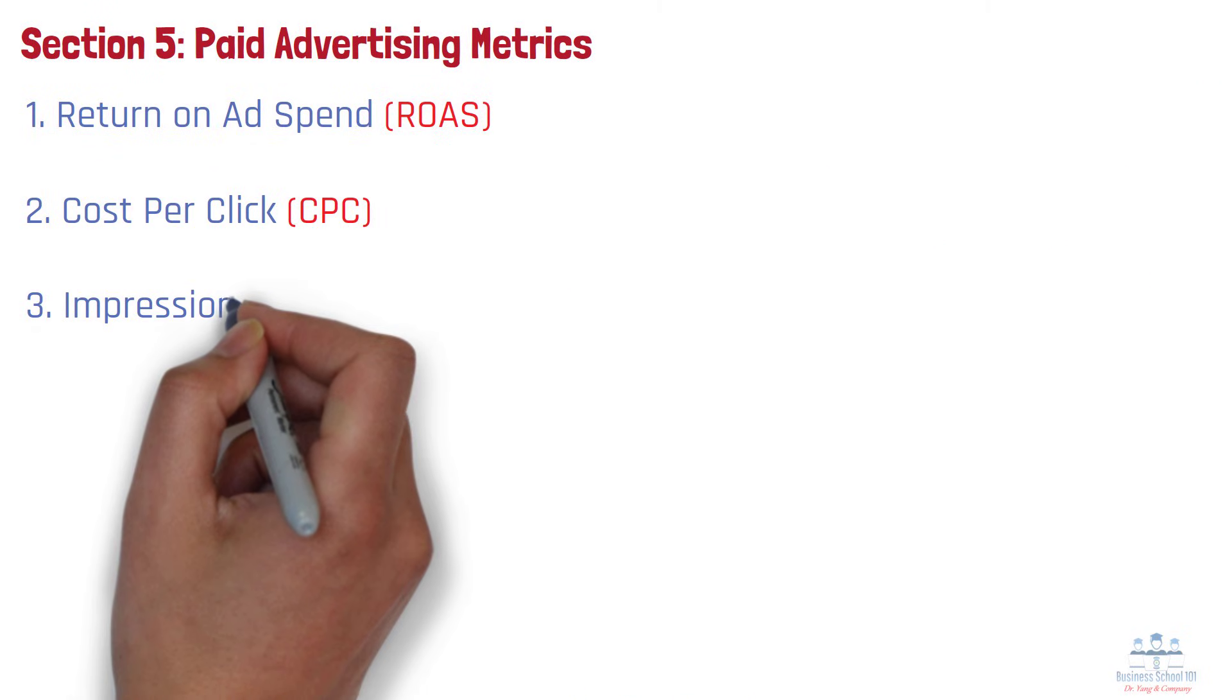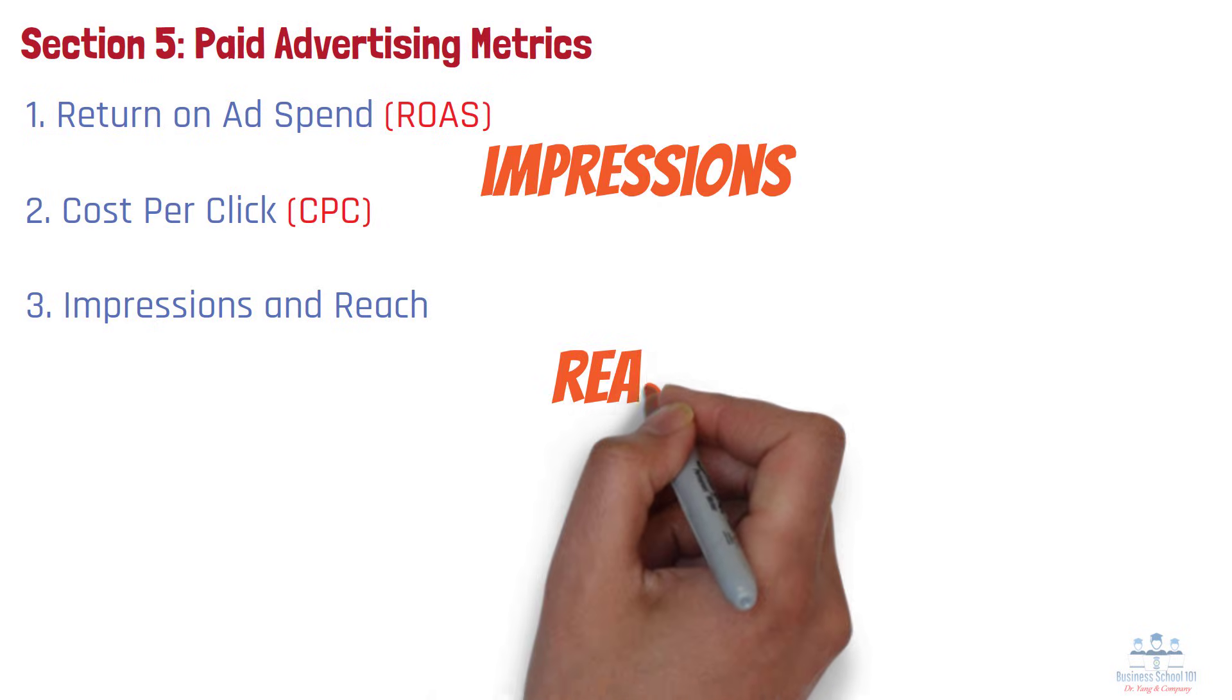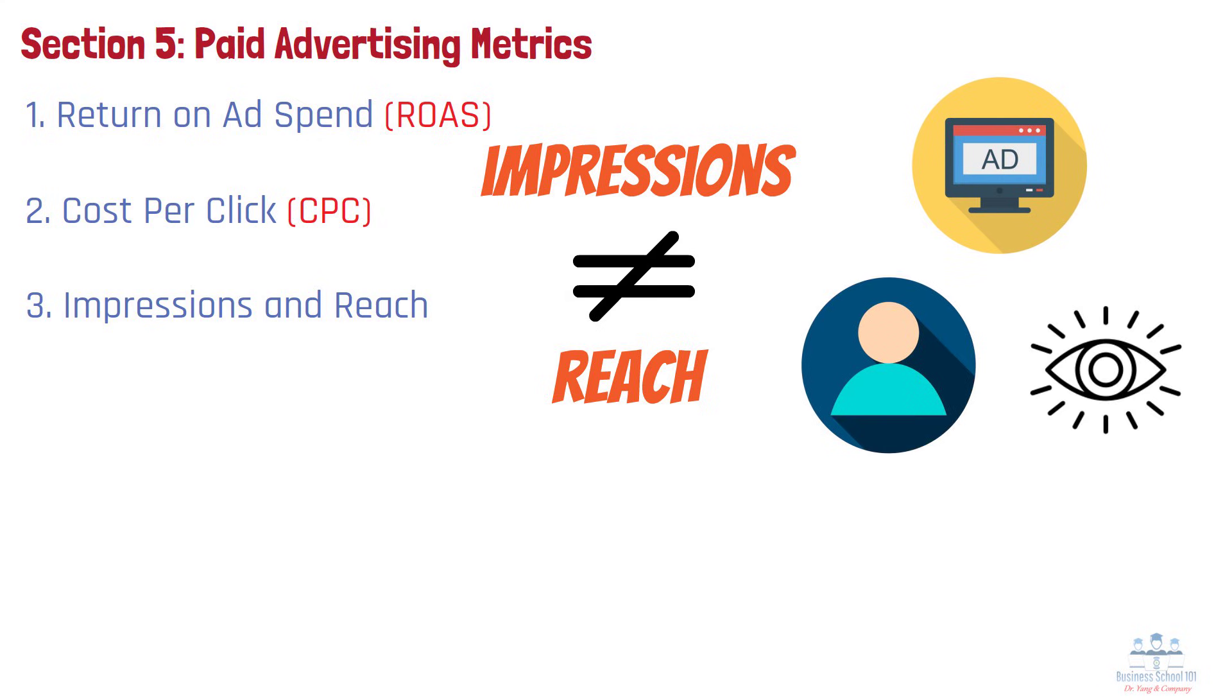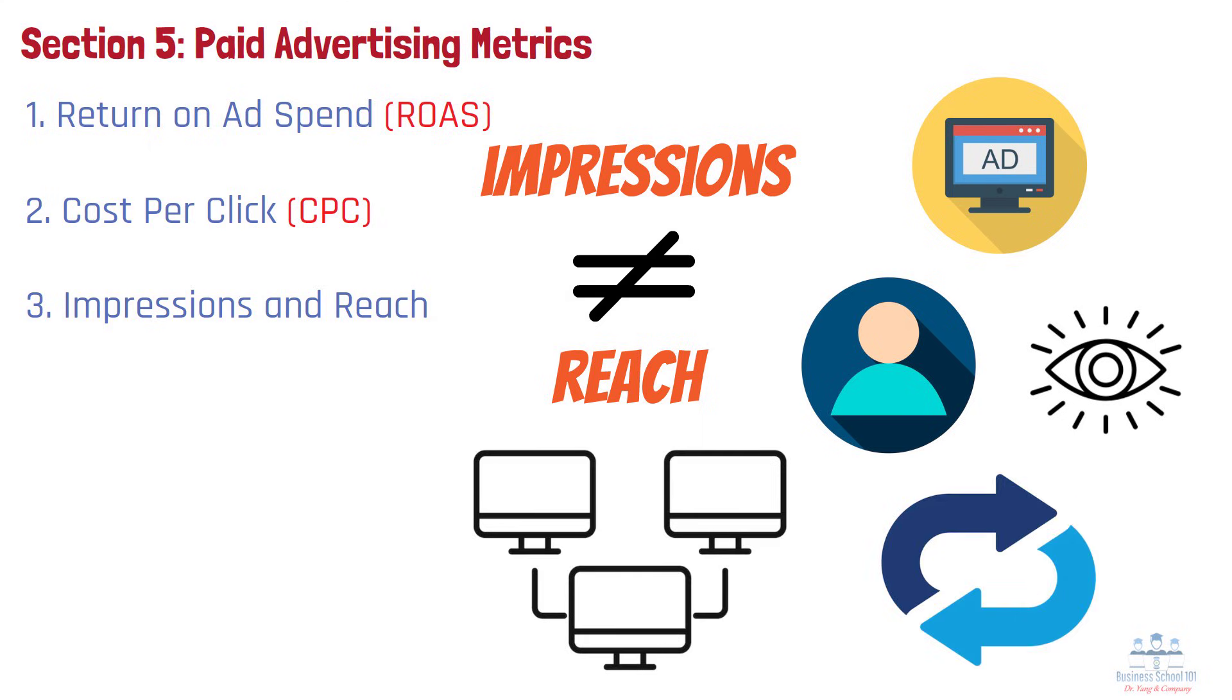Number 3. Impressions and Reach. Impressions and reach are often confused but mean different things. Impressions count the number of times your ad is shown, while reach refers to how many unique users have seen it. High impressions with low reach suggest repeat exposure, while high reach with low engagement may require a different creative approach.